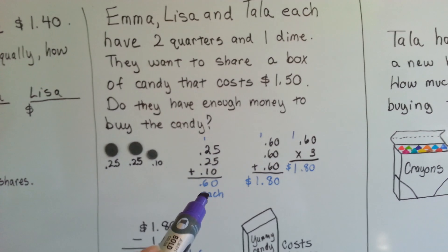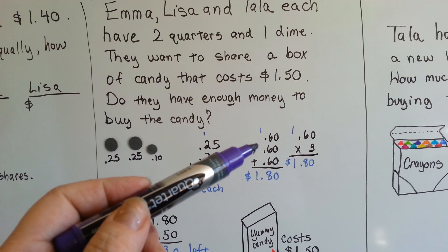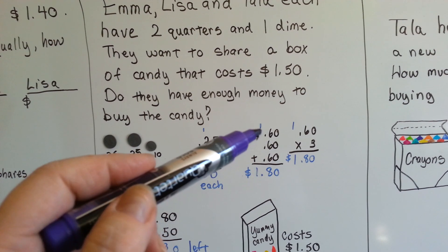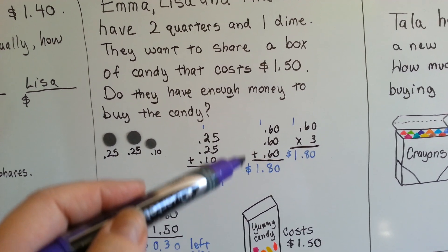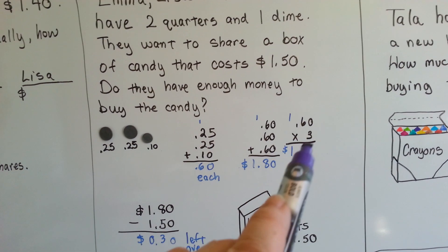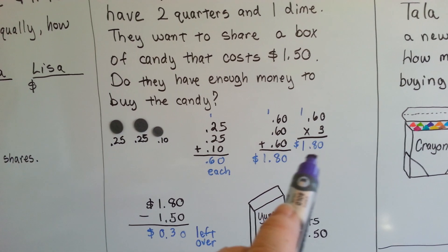There's three people, one, two, three, that each have sixty cents. So that's sixty cents plus sixty cents plus sixty cents. Six plus six plus six is eighteen. Carry the one, put the eight down, drop the one, and that's a dollar eighty. We also could have done sixty cents times three, which would have still been a dollar eighty.